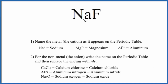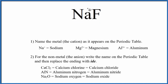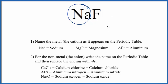To write the name for NaF, we first have to figure out what type of compound we have. Since sodium is a metal and fluorine is a nonmetal, it's an ionic compound — we're going to have to think about charge. And because we only have two different elements here, it's a binary ionic compound.